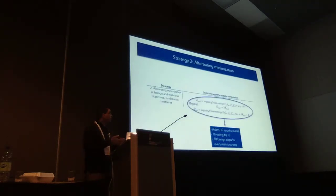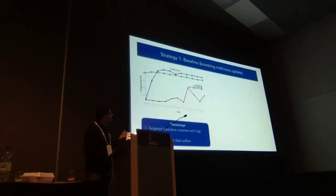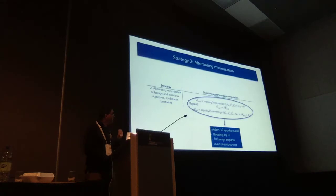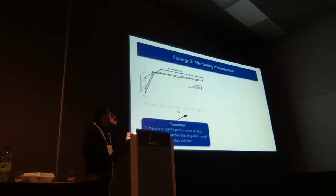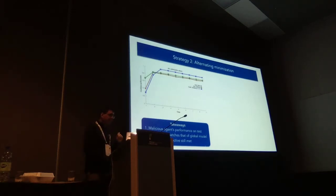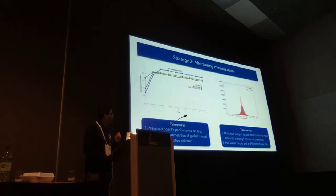The next strategy is called Alternating Minimization. The malicious agent first runs the malicious update step, boosts its update, and after that runs benign training to ensure that classification accuracy on test data does not suffer — repeating this until convergence. Once done, it sends it back to the server. With this strategy, the blue line is basically unaffected — the global model is still classifying that class 5 as class 7. But now the malicious model's accuracy on test data is almost the same as the global model, which means detecting it as an aberrant update using this method is not possible.